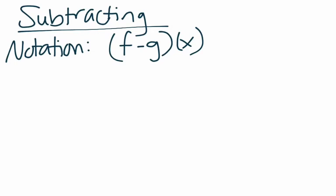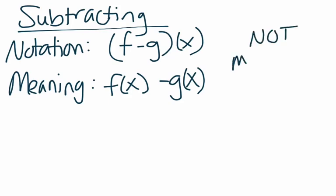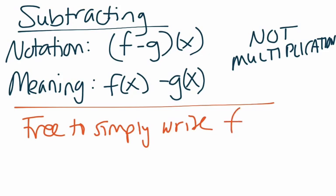The meaning of this notation is f of x minus g of x. Again, that is not multiplication — I'll put that in big capital letters here. It is not multiplication, and therefore it is not distribution. I do understand that it looks that way, but it's not. And you are always free to simply write f minus g. If the function notation bothers you, it is okay to just write f minus g.